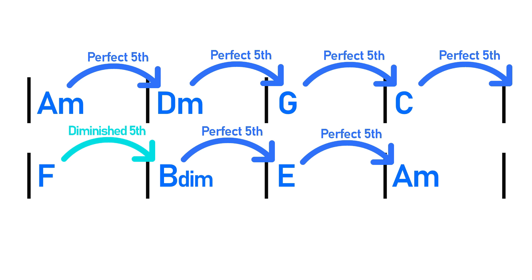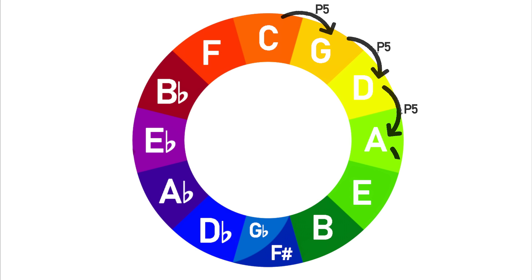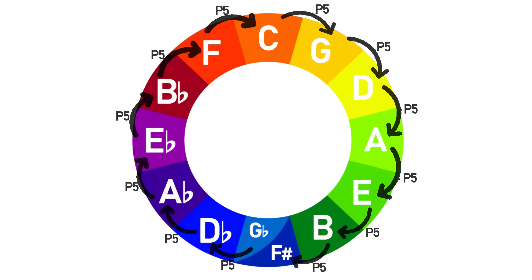But what actually is the circle of fifths? The circle of fifths is simply a tool that musicians use to conceptualize how notes, chords, and key centers are related to each other. We can actually arrange the 12 pitches of western music into a circle where each one is a perfect fifth away from each other, and in a very satisfying way our 12 pitches can wrap around this circle, each time being a perfect fifth away from another.